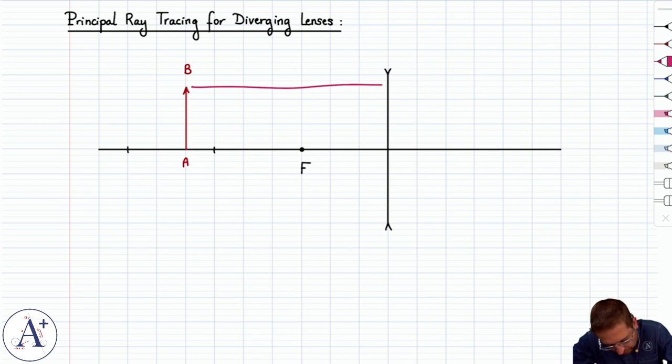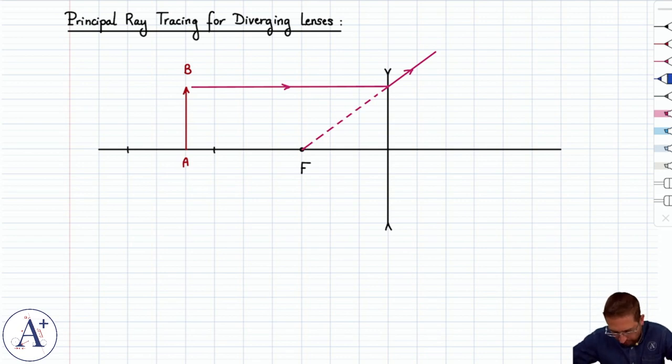The ray of light parallel to the optical axis will emerge through the lens aligned with the focal point F, and then the ray of light going through the center of the lens is not going to be deflected.